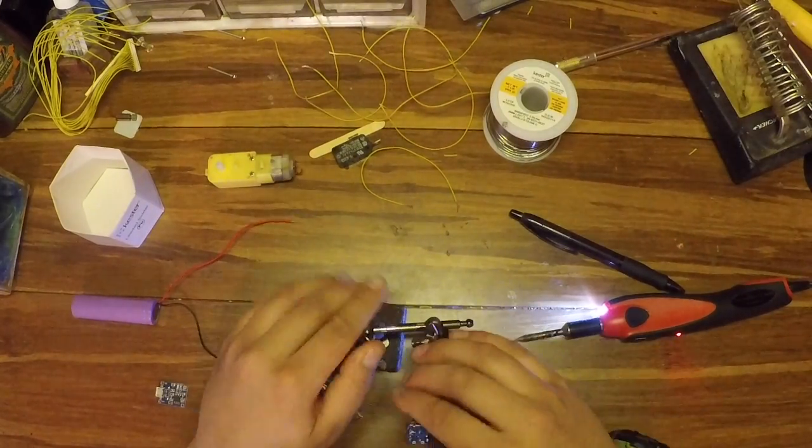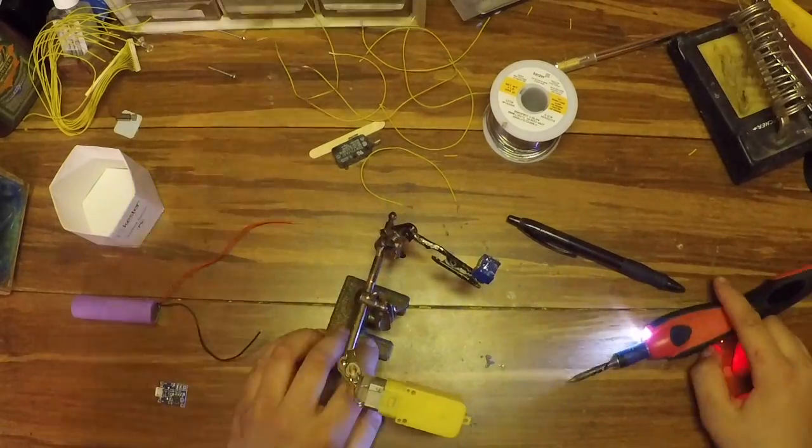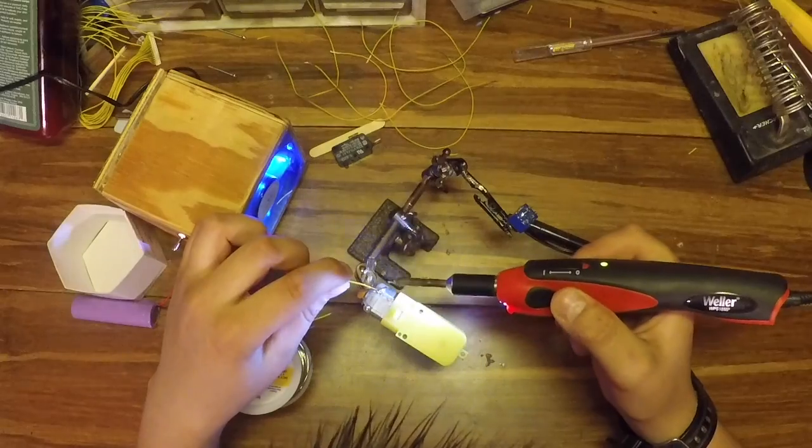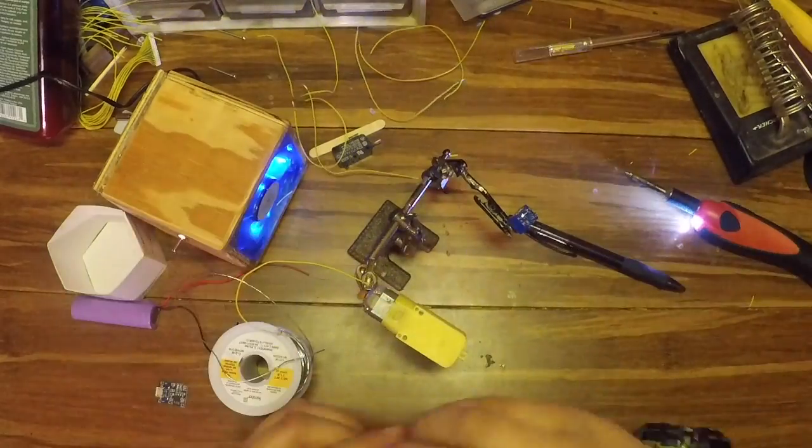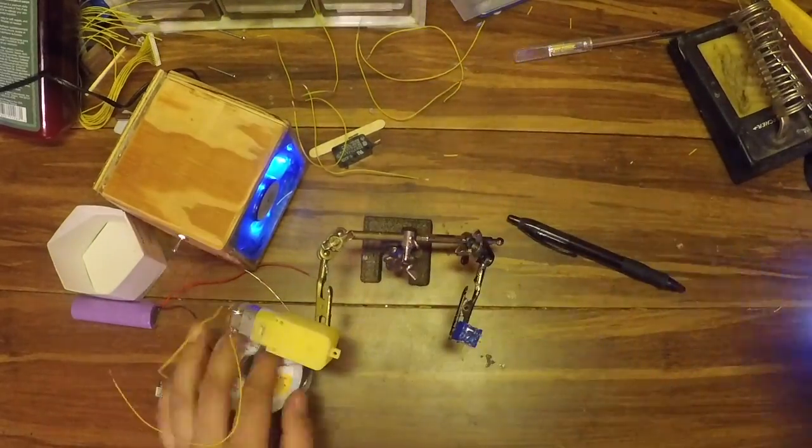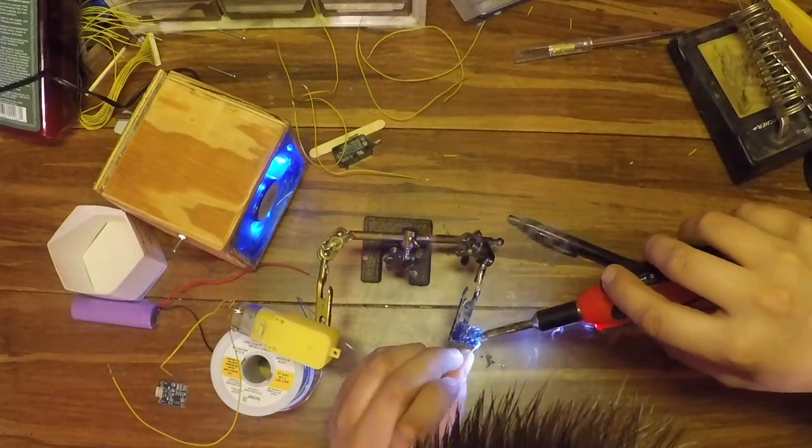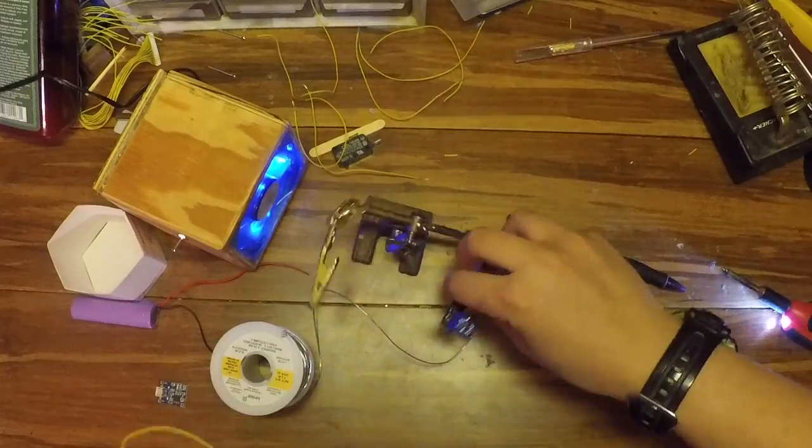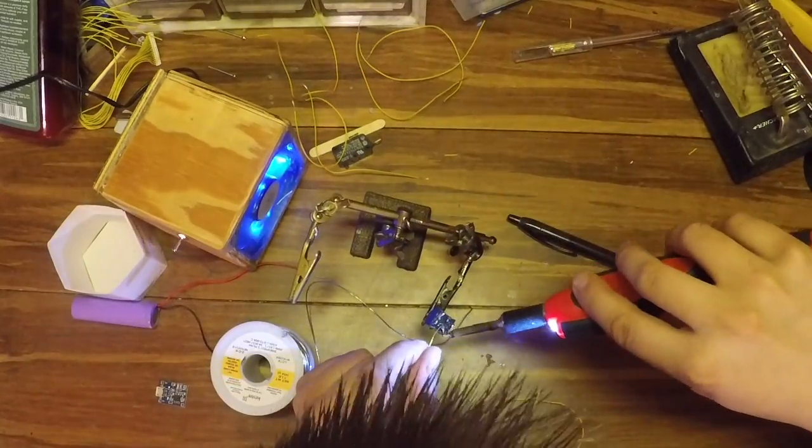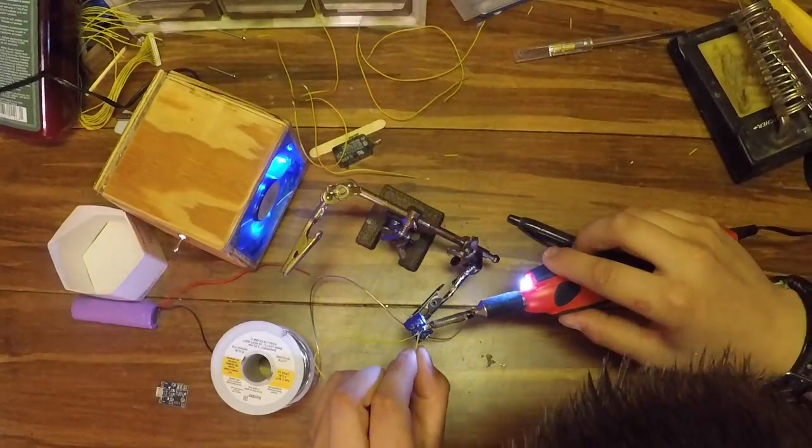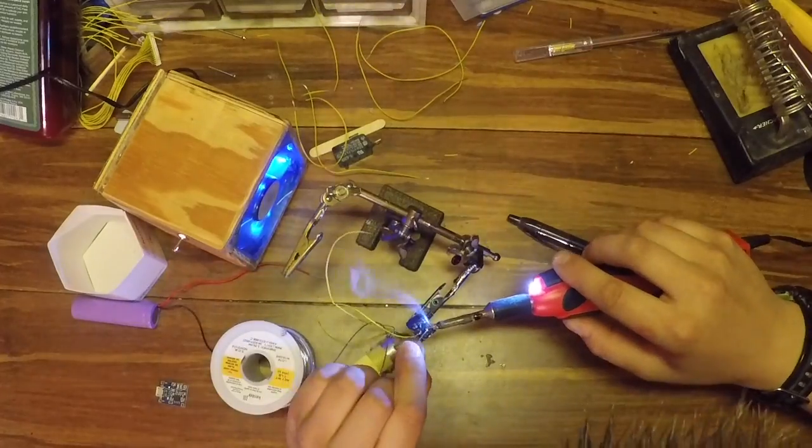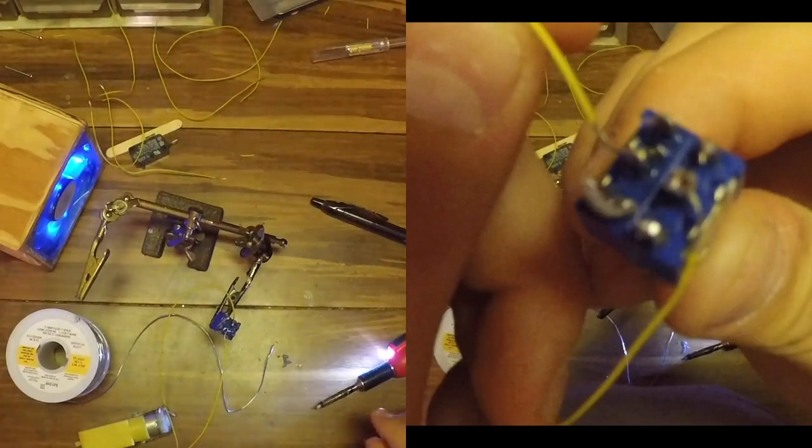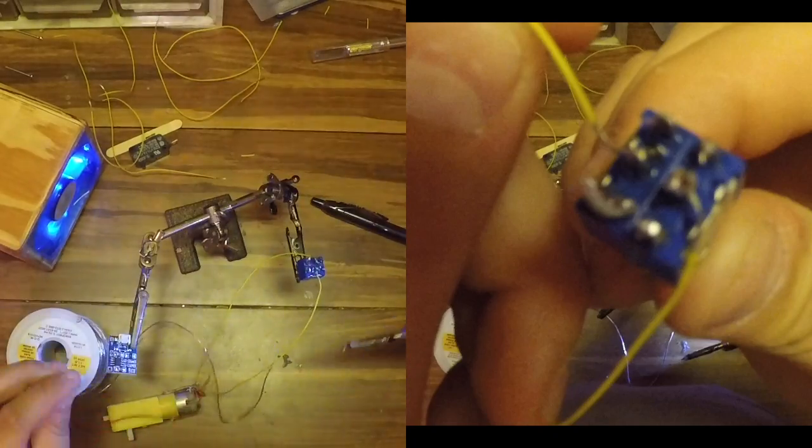And then I just started off by soldering two wires onto the positive and negative terminals of the motor. And I soldered those two wires to pins three and four on the six pin switch. So the wires of the motor go right in between all of the pins on the two ones in between. As you can see close up on the right hand screen you can see the two wires of the motor.